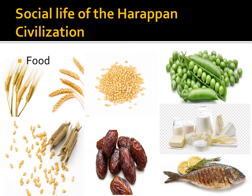Now, after economic life, let's study about the social life of Harappan civilization. Social life mostly consists of food, clothing, utensils, ornaments, and toys that were found. The main occupation of the people of Indus Valley were agriculture and livestock rearing. People of this time used to have wheat, barley, millet, peas, sesame, date palms, etc. in their diet.